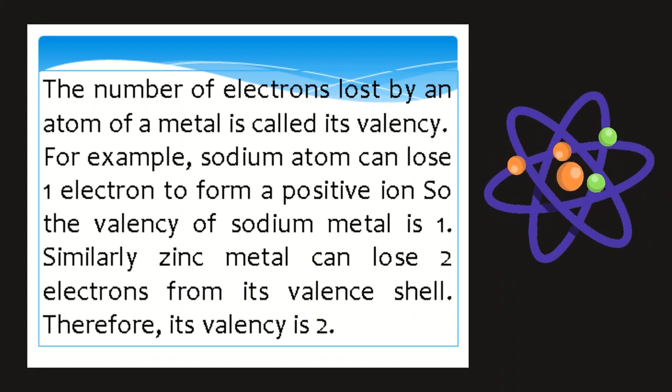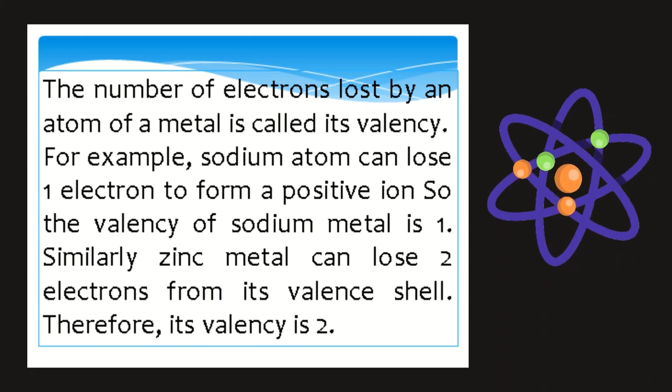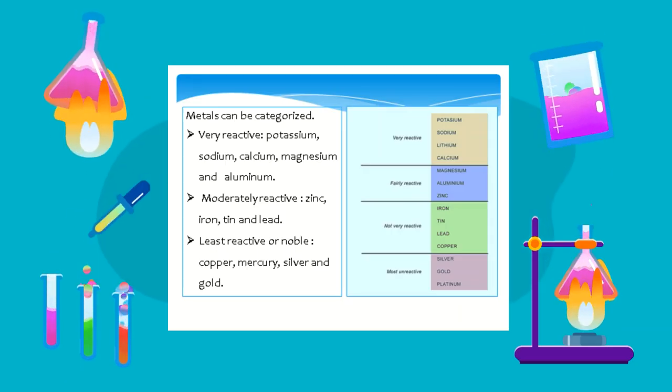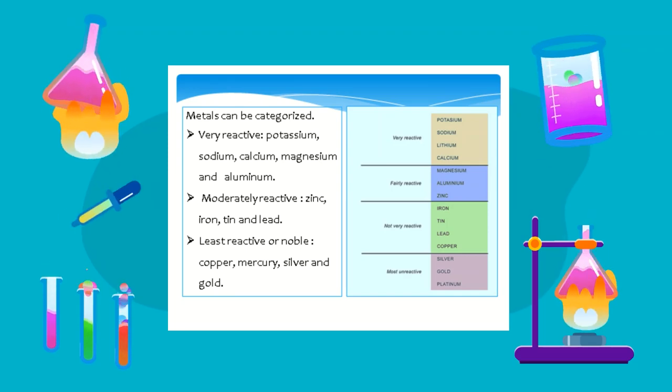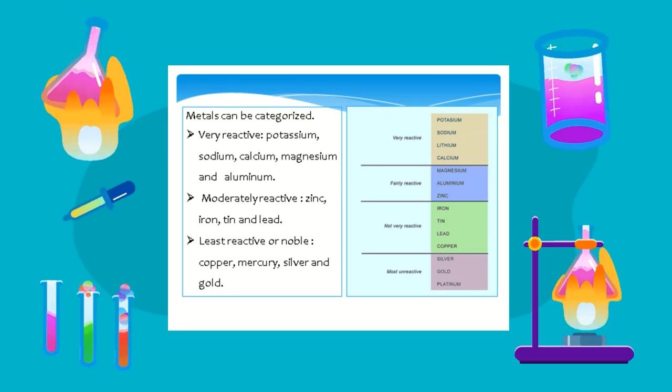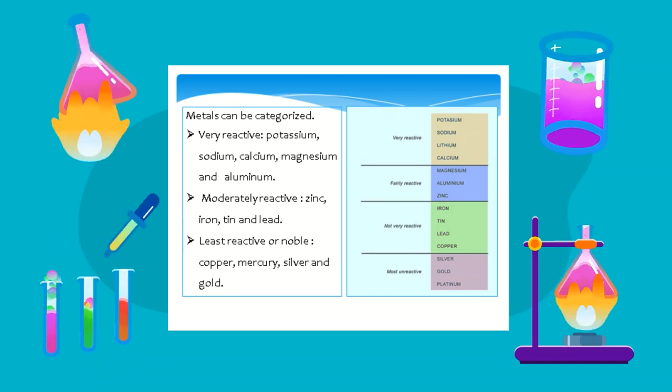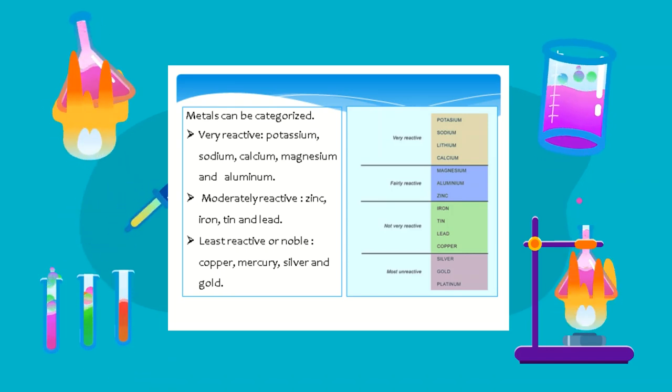Metals can be categorized as very reactive: potassium, sodium, calcium, magnesium, and aluminum; moderately reactive: zinc, iron, tin, and lead; least reactive or noble: copper, mercury, silver, and gold.